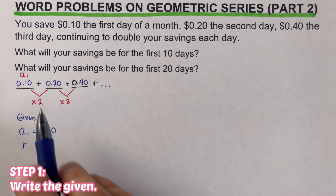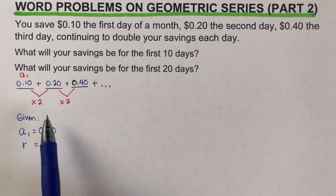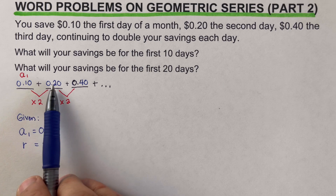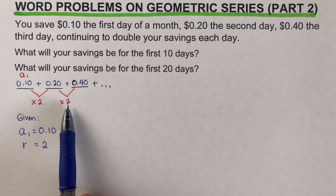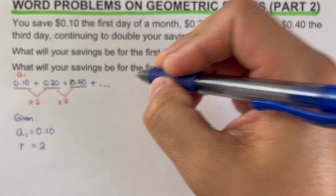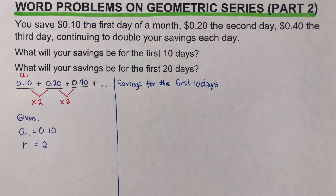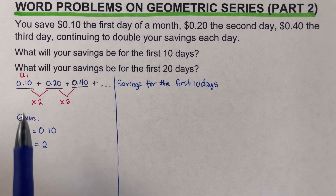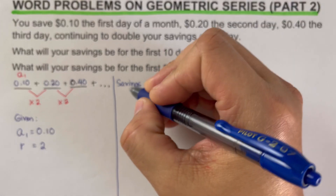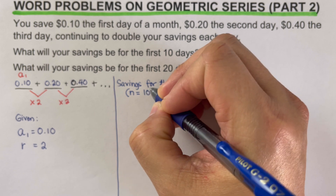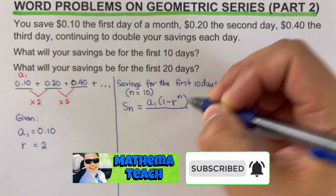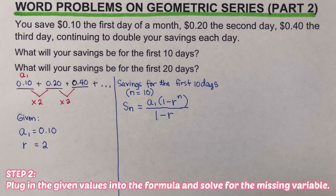We are looking for the sum of this geometric series. It is a geometric series because we are multiplying the first value by a constant number 2 each time: 0.10 × 2 = 0.20, 0.20 × 2 = 0.40 — there is a common ratio. For the savings over the first 10 days, we have n = 10. We now write the sum formula: S_n = a₁ · (1 − r^n) / (1 − r).